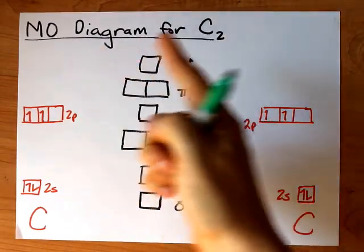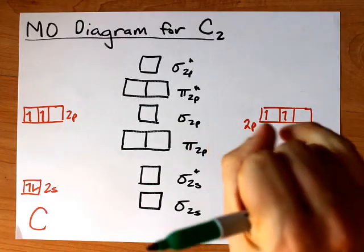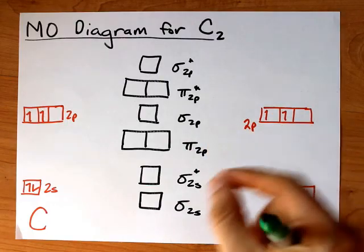Alright, let's draw the molecular orbital diagram for C2. That's two carbon atoms trying to overlap and mix to create a molecule.